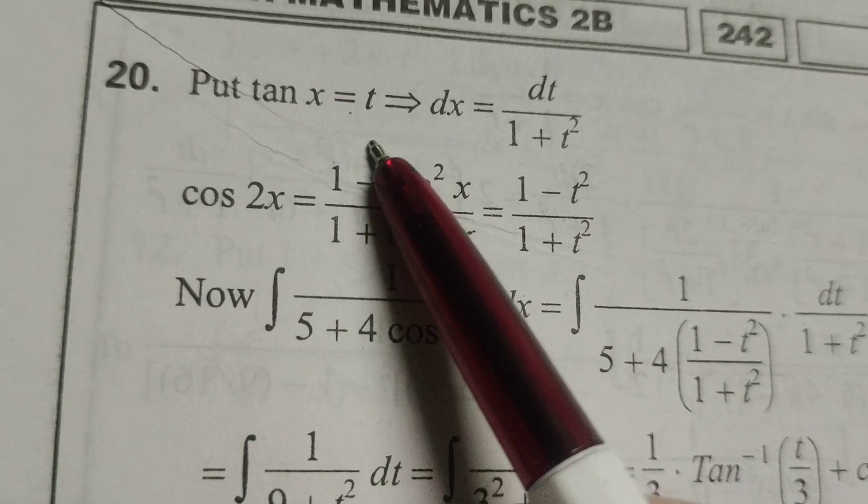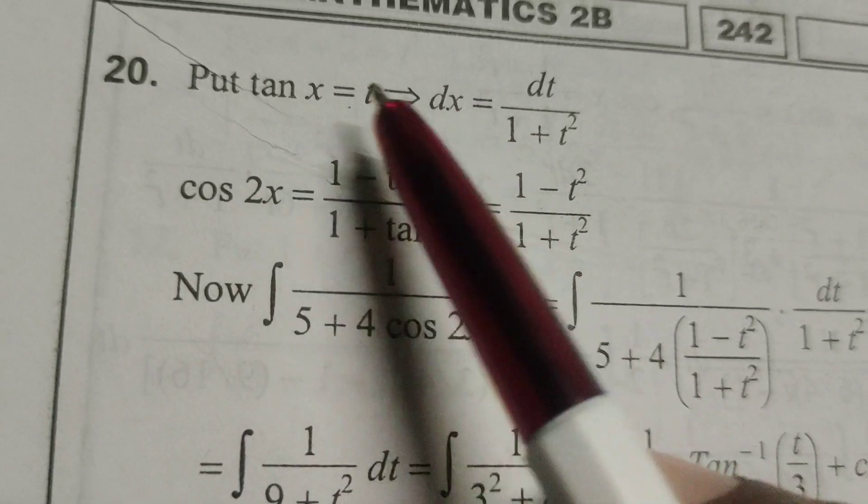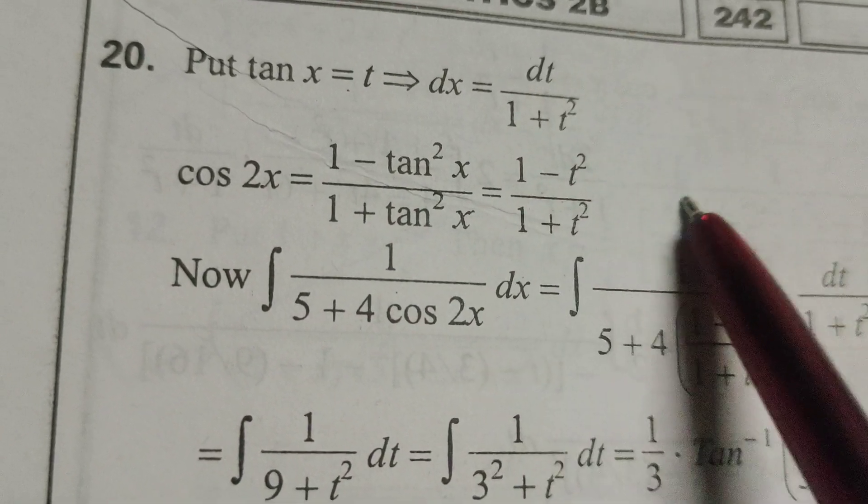Here put tan x equals to t. Then differentiate this: dx equals to dt by 1 plus t square.